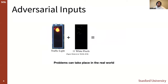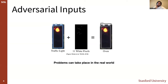Another issue we can encounter is adversarial inputs — changes to inputs crafted such that models produce the wrong output. On the left, we can see what we agree is a traffic light, and the system correctly classifies it as such. But by just adding 11 white pixels in the second image, we get a resulting image that the system erroneously classifies as an open sign. Imagine if an autonomous car using this kind of model didn't correctly identify a traffic light — it could lead to catastrophic consequences.